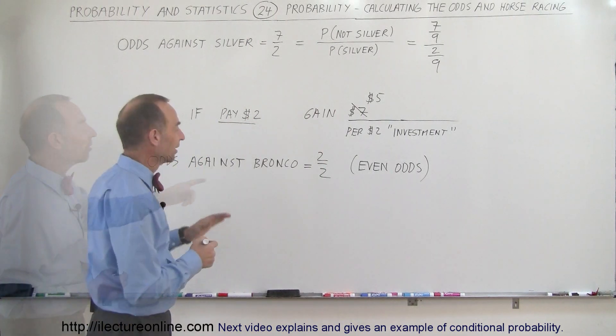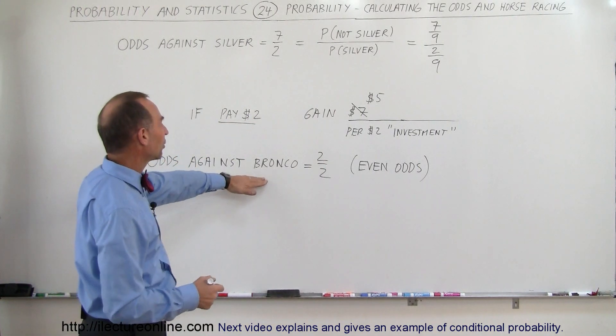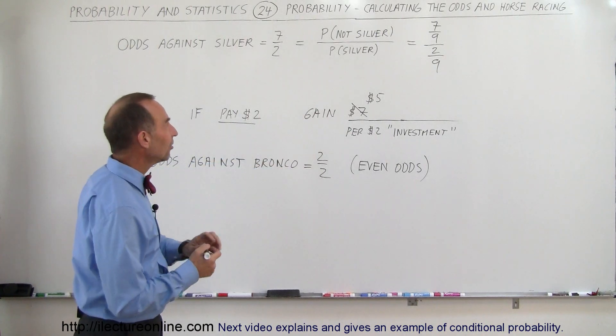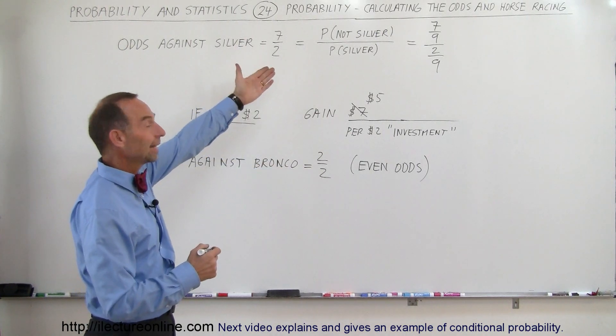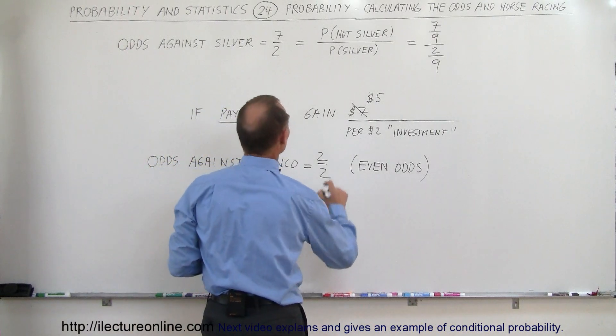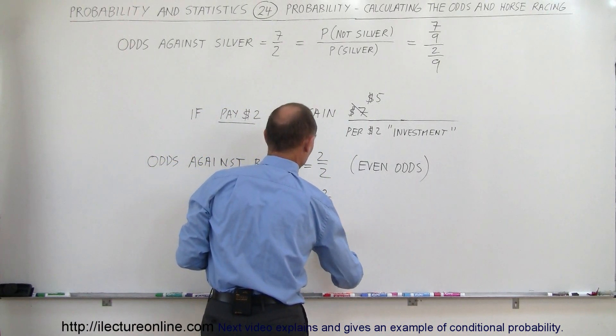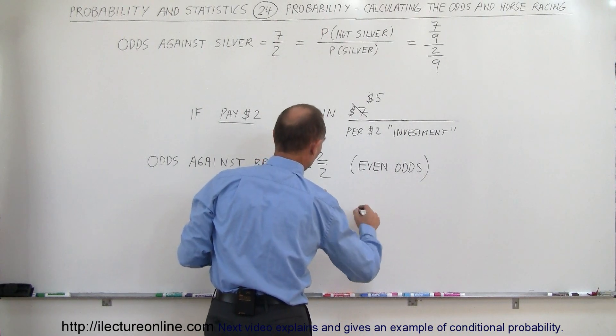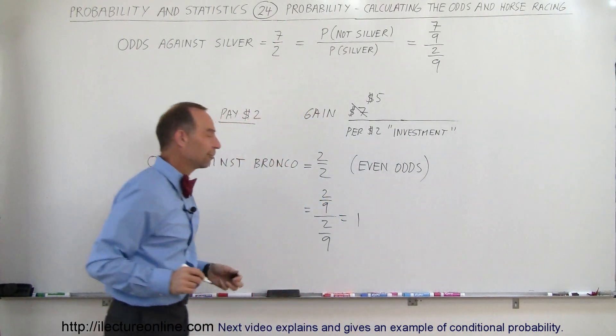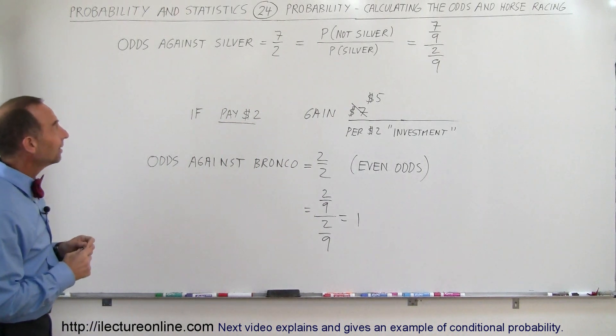Alright, okay, so odds against Bronco, 2 to 2, which means even odds, and so if you then calculate that in the terms of probabilities, then this would be equal to 2/9 divided by 2/9, which is equal to simply 1, and therefore that's what's called even odds.